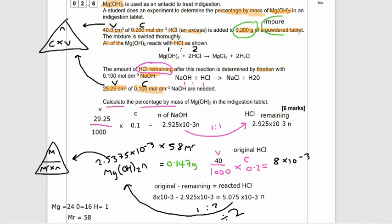So we want to find out what percentage of the original 0.2 gram impure powder tablet was magnesium hydroxide. So we do 0.147 over 0.200 times by 100, and you're going to get something like 73.5%. It's probably best round this to two significant figures. So we can call that 74%.